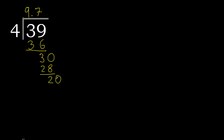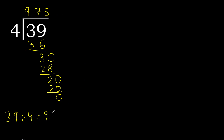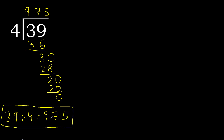The point is here. 20 — 4 multiplied by 5 is 20. 20 minus 20 is 0. Therefore finish. 39 divided by 4 is finished.